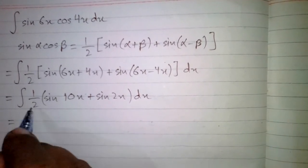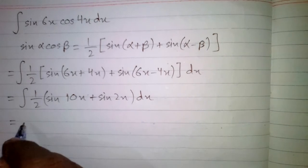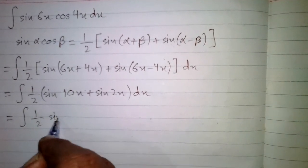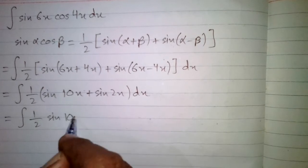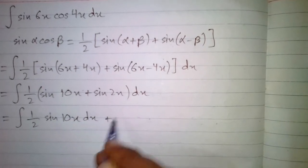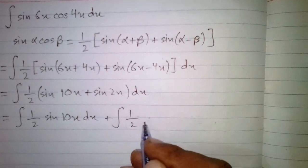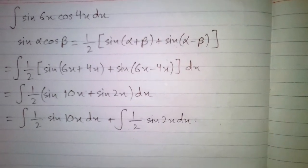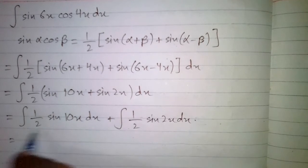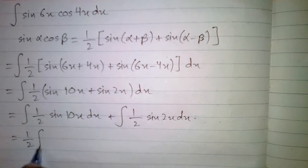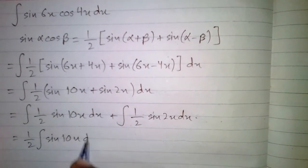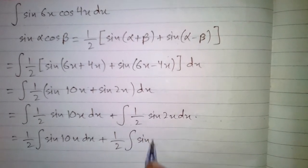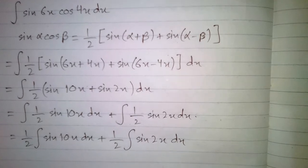Now we apply the integral on both terms separately. We have the integral of one-half sin 10x dx plus the integral of one-half sin 2x dx. We can bring the one-half in front of each integral.